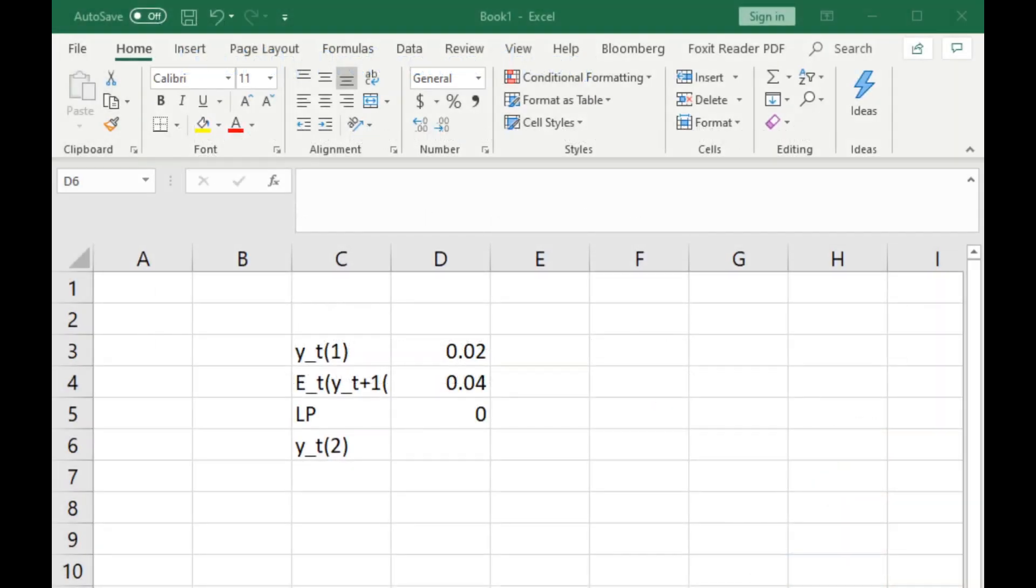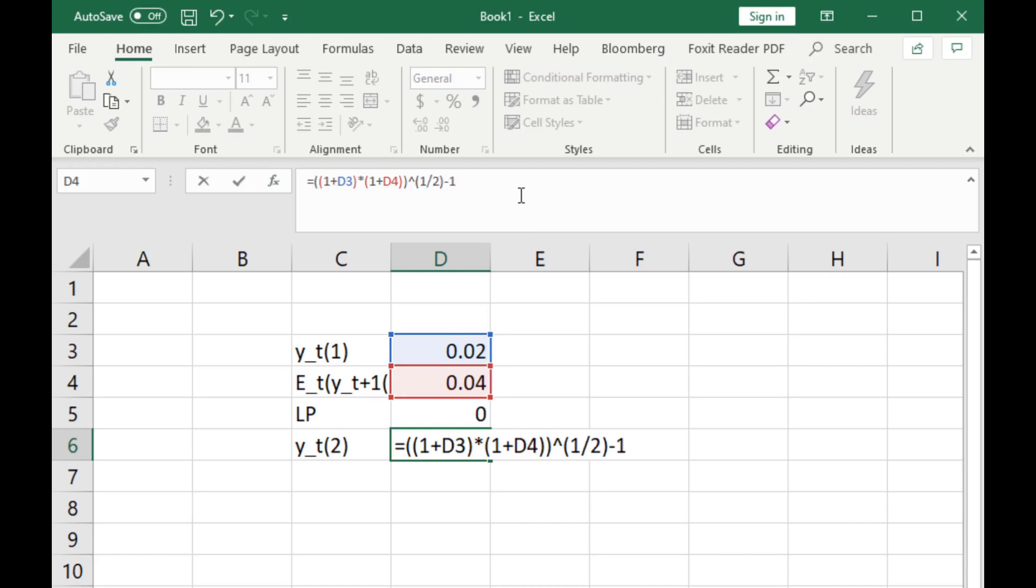Well, let's look at the differences that having a liquidity premium introduces relative to expectations hypothesis. We've got our initial setup for the expectations hypothesis: a short-term yield in the spot rate for one year of two percent, the expected yield for a one-year rate a year from now, four percent. Let's leave the liquidity premium at zero for now and remind ourselves what the two-year yield should be according to the expectations hypothesis. Remember, it's just one plus the spot one-year yield times one plus the expected one-year yield a year from now to the power of one-half minus one, or three percent.